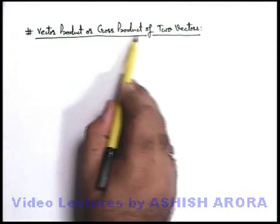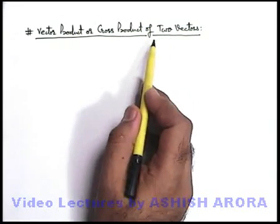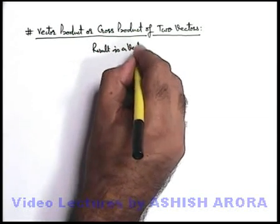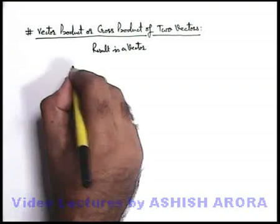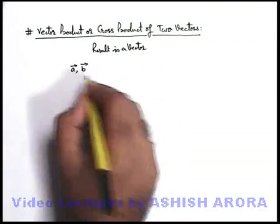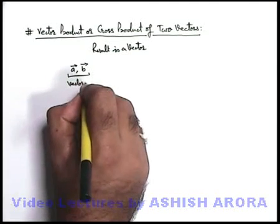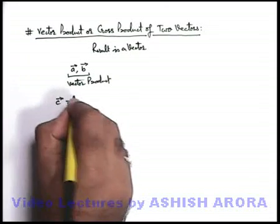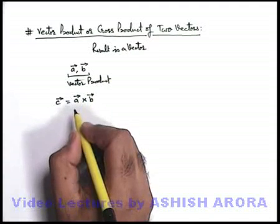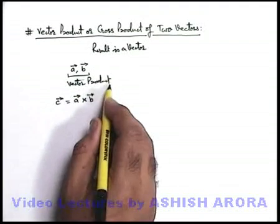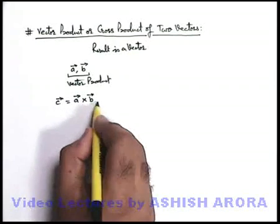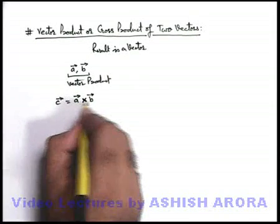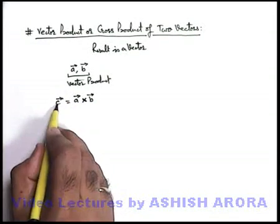Now we'll study vector product or cross product of two vectors. In case of vector product, the result is a vector. When we multiply two vectors, say a vector and b vector, using vector product, the result will be a vector c, represented as a cross b. The cross product is represented by placing a cross between the symbols of two vectors, and the result c is a vector quantity.